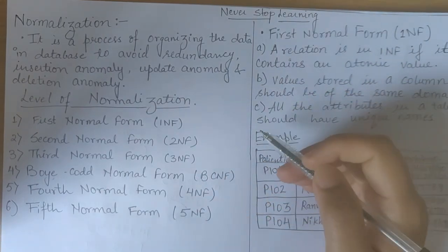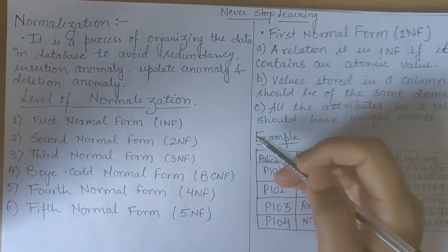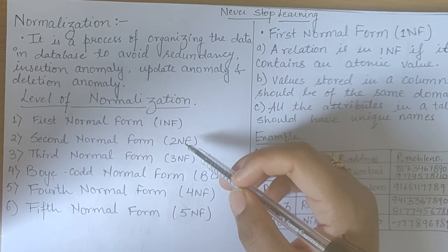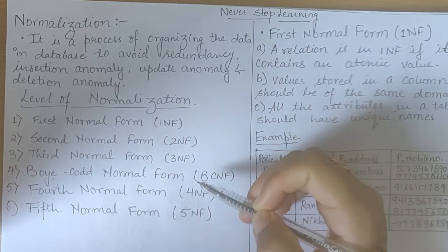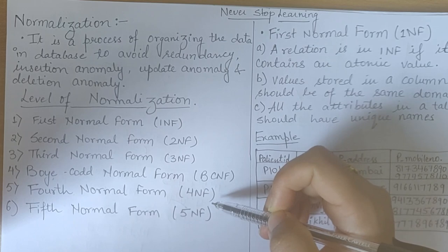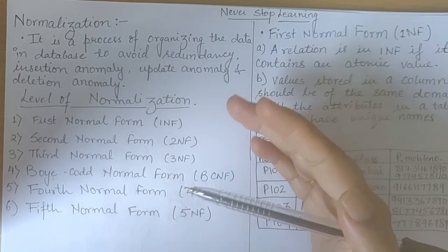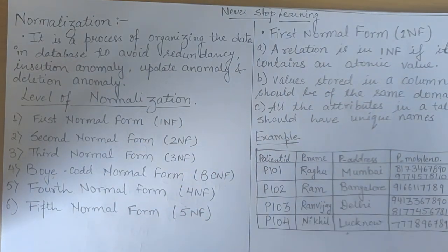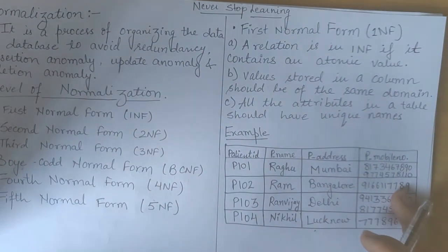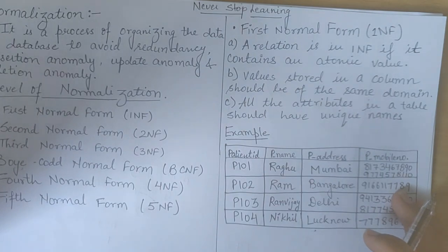There are various levels of normalization. There can be First Normal Form, Second Normal Form, Third Normal Form, Boyce-Codd Normal Form (BCNF), then Fourth NF and Fifth NF. We are going to study each and every normal form one by one. Let's start with First Normal Form.